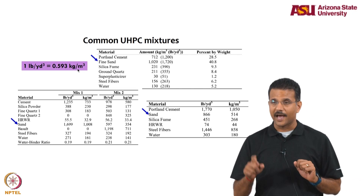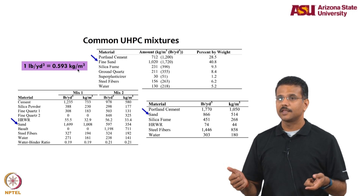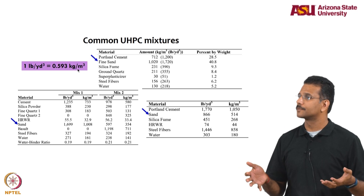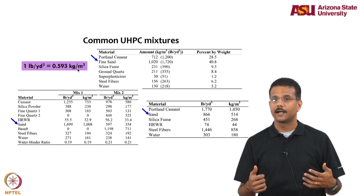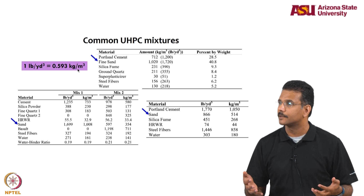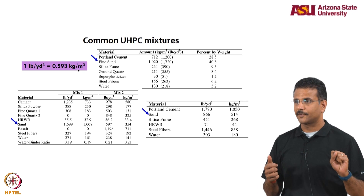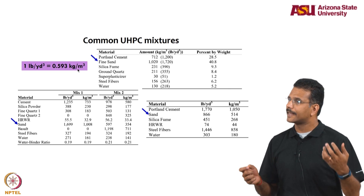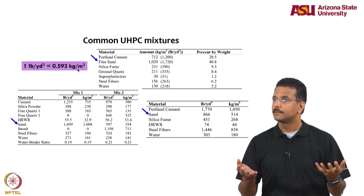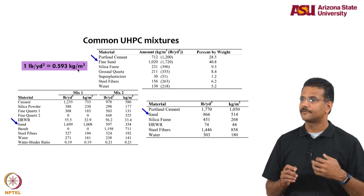Sand is essentially the only aggregate in ultra high performance concrete in most commercial mixtures — it is effectively an ultra high performance mortar. The reason is that controlling mortar properties is much easier than controlling concrete properties. In mortar, you rarely have problems of bleeding and segregation, whereas with concrete those issues arise if quantities are not correctly proportioned. Using sand ensures the flowability criteria is satisfied.